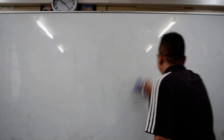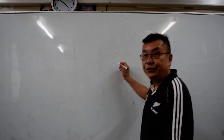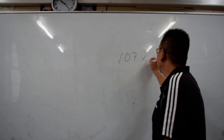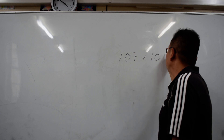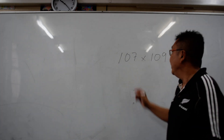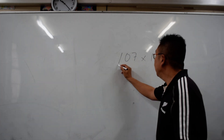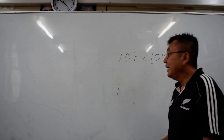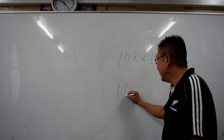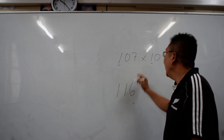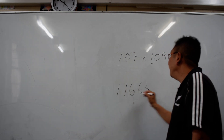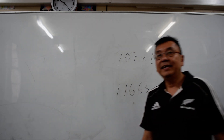Last but not least, I am going to show you a 3-digit multiplication. For 107 times 109: the leading 1 stays as 1, then you add 7 and 9 to get 16, and then 7 times 9 is 63. So the answer is 11,663.